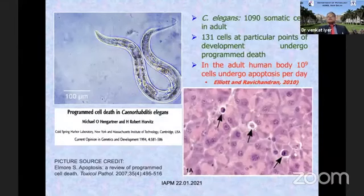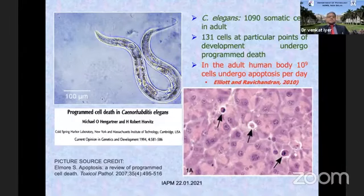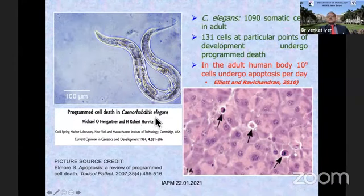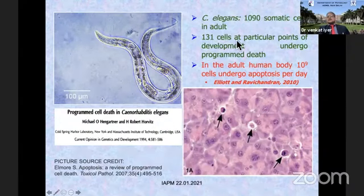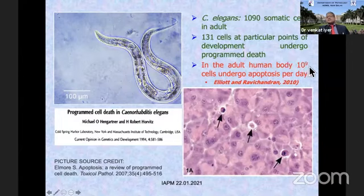This was the understanding of cell injury when, around 50 years ago, we found that there is another form of cell death called apoptosis. It was discovered in the tiny nematode worm found in soil called Caenorhabditis elegans or C. elegans. It has around 1,000 cells only, of which exactly 131 cells die at a particular precise point by programmed cell death. In contrast, the human body has 10 to the power 9 — that means 1 billion cells — undergoing apoptosis every day.